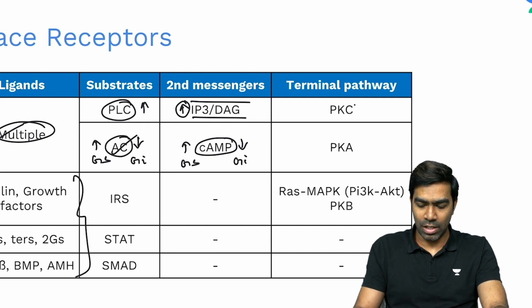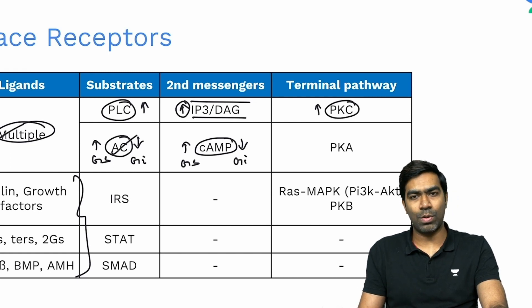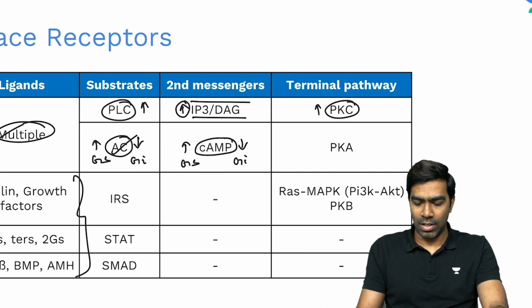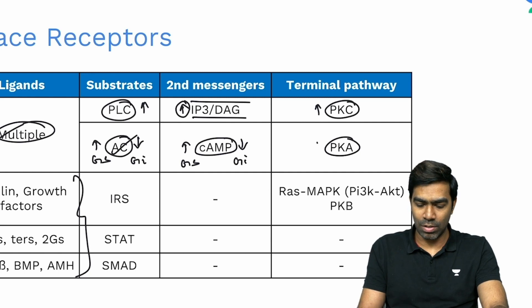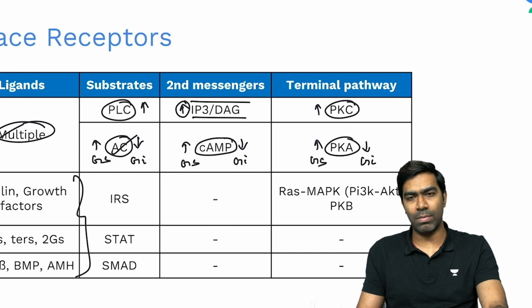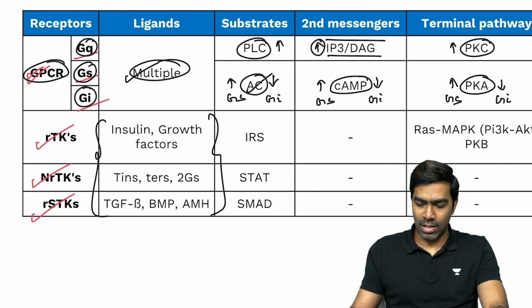The terminal proteins activated depend on the pathway. If the Gq pathway is activated, protein kinase C (PKC) activity increases. For the Gs or Gi pathways, protein kinase A (PKA) is affected — increased in the Gs pathway and decreased in the Gi pathway.